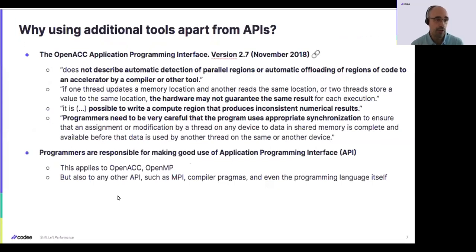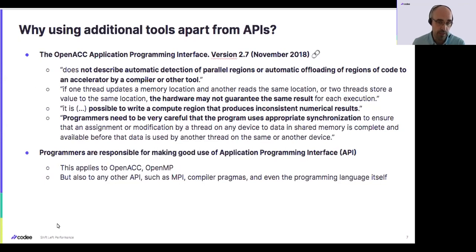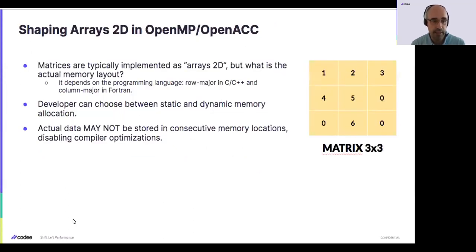It is important to remark that it is up to us as developers to be responsible for making correct usage of the programming language, the compiler that implements the language specification, and the parallel programming API we use — OpenMP, OpenACC, or any other. We need to learn the rules and use them appropriately so that the compiler can do the rest of the hard work consistently.